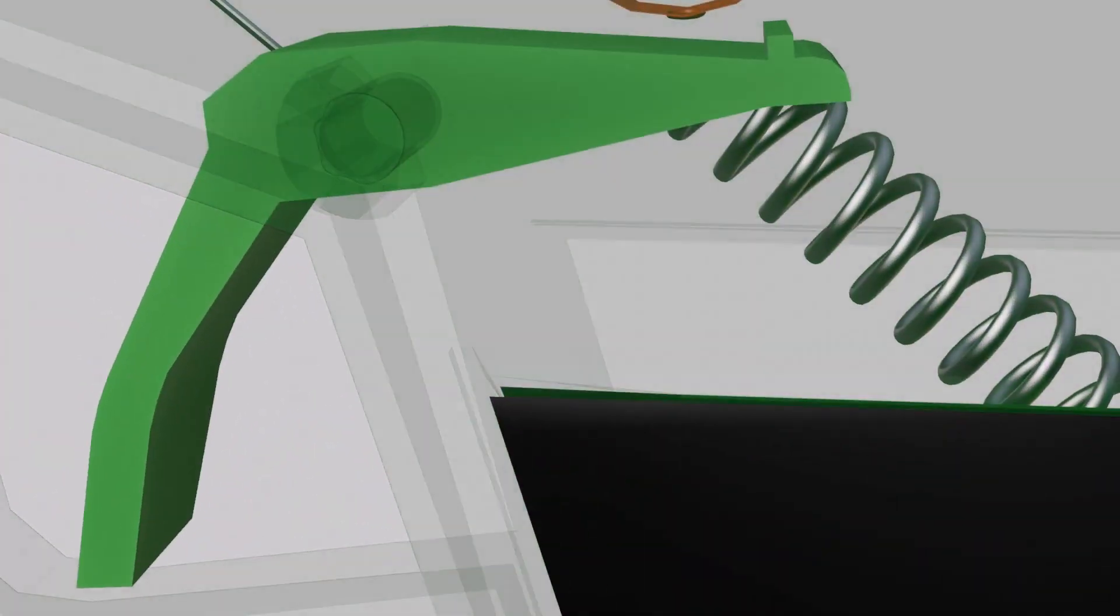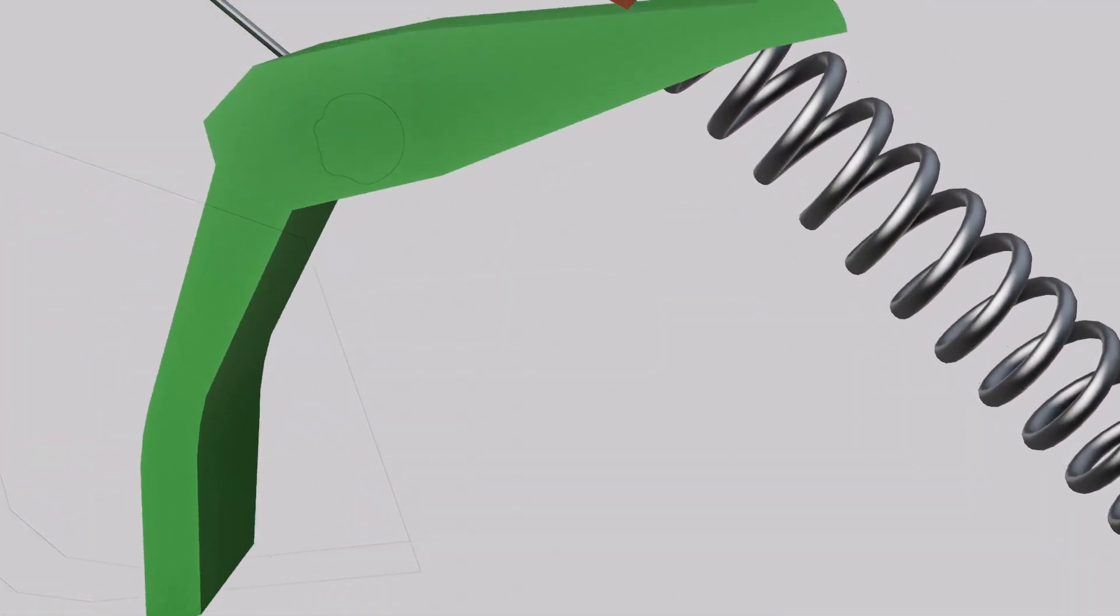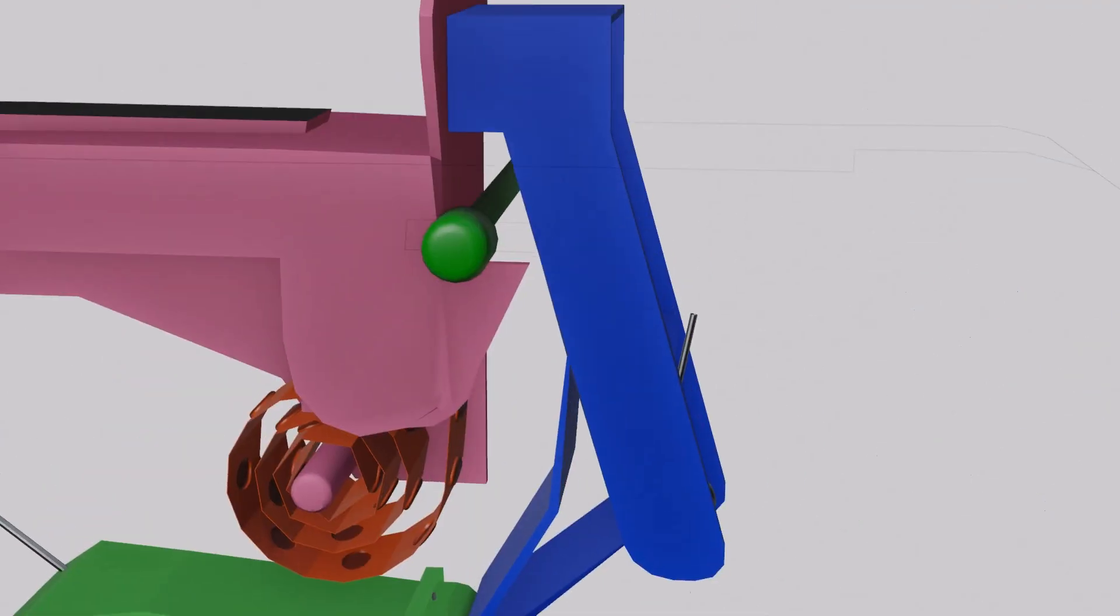The trigger lever is loaded with a spring for return after releasing the finger. The hammer is also loaded with a spring. The hammer gives the pressure for the roll cap to burst.